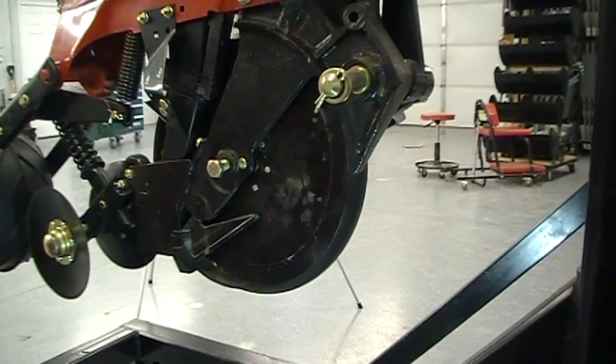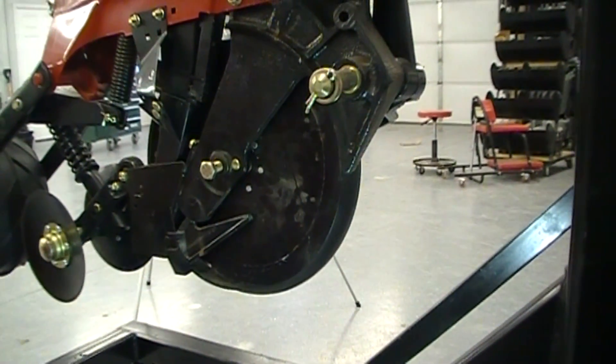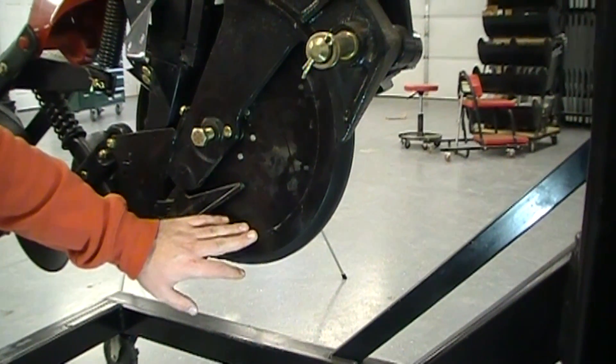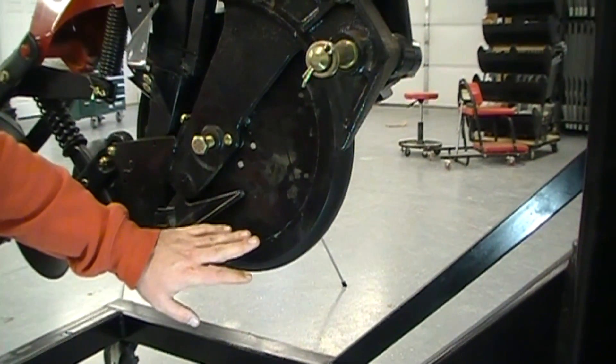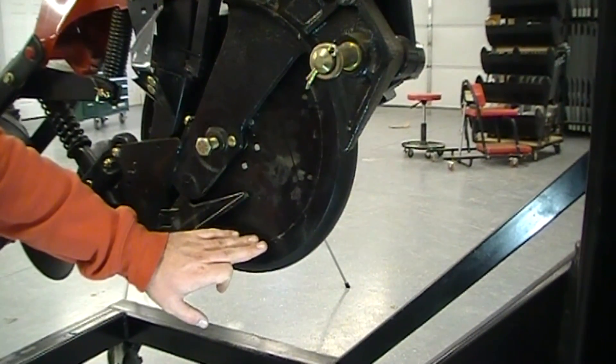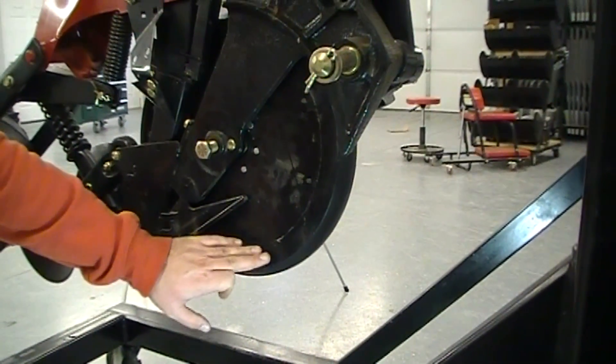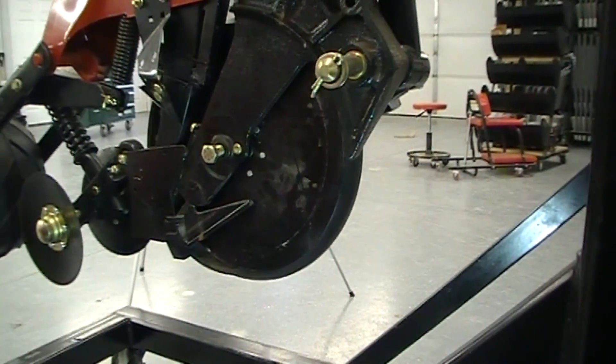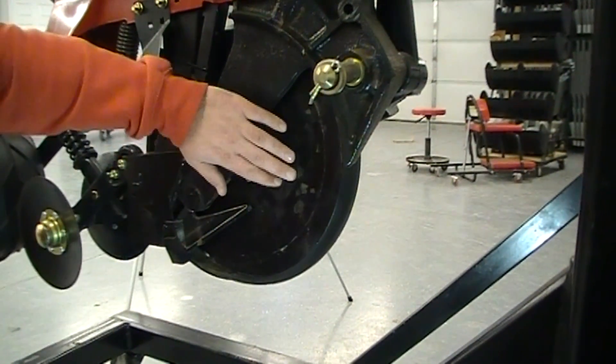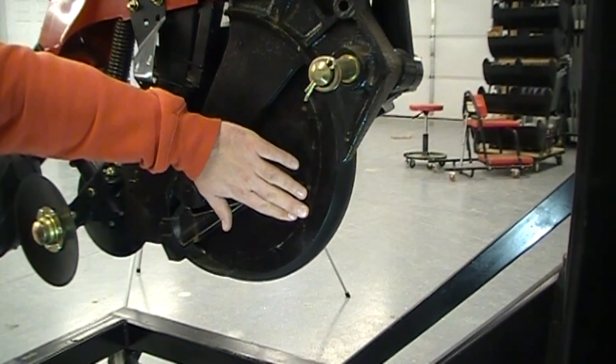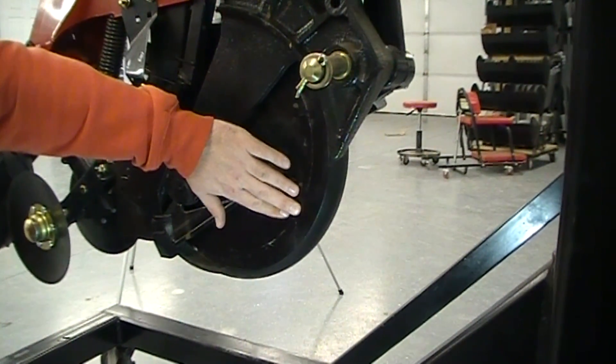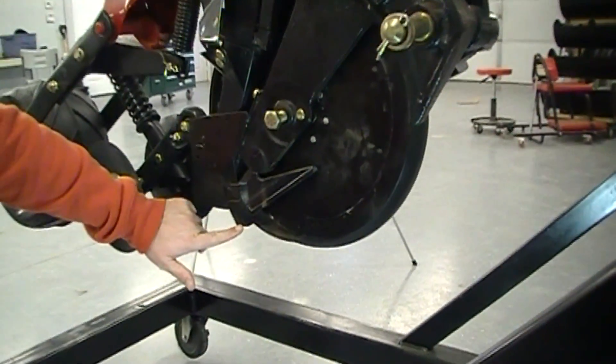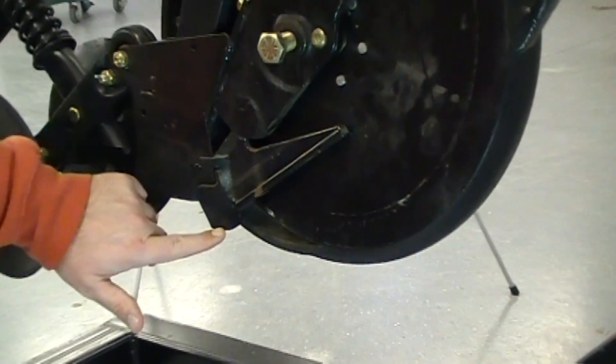Here we're looking at a Case IH row unit. Similar to the Great Plains, we have a leading and a trailing disc. The other thing is that the disc openers on a Case planter, there's a specific right and a left, so we need to make sure we got those put on there correctly. A lot of times we see those reversed. The other thing to note is that contact area on the front of these disc openers isn't near as important as it is on the other row units. The reason being is that we have this firming point down here to form our true V in the bottom of the trench.